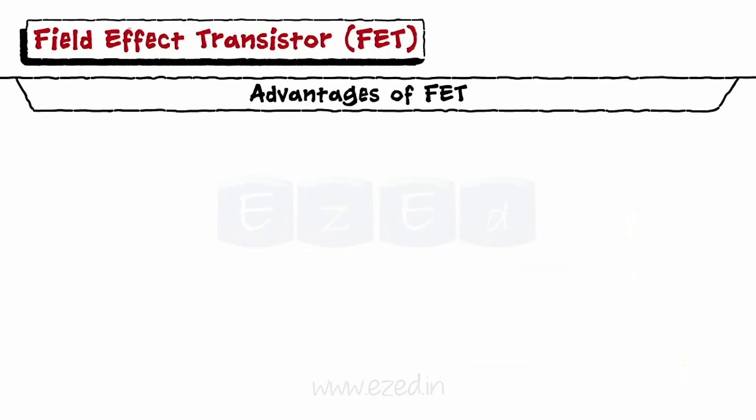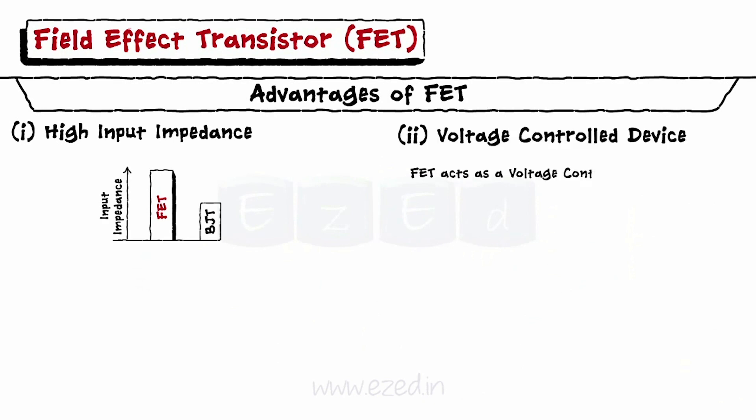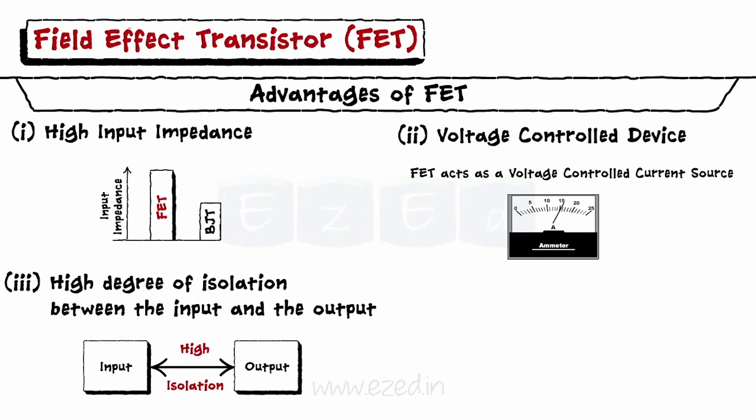The advantages of FET over BJT are high input impedance, FET is a voltage control device, it provides high degree of isolation between the input and the output, less noisy, etc.